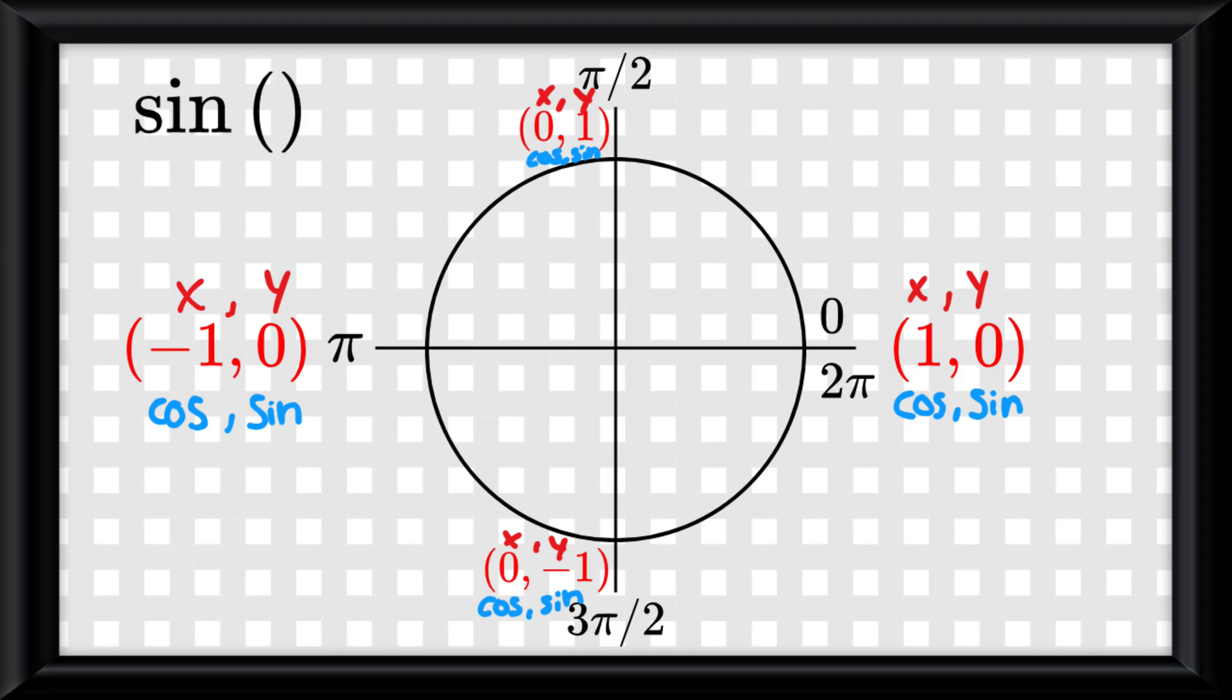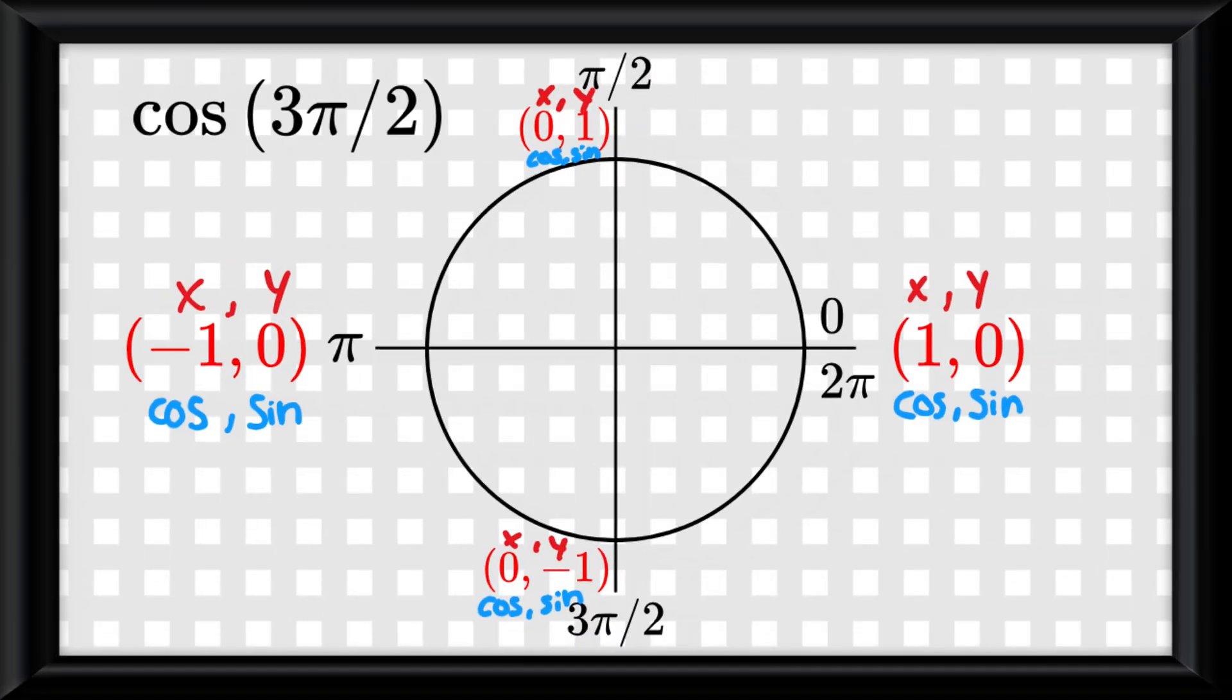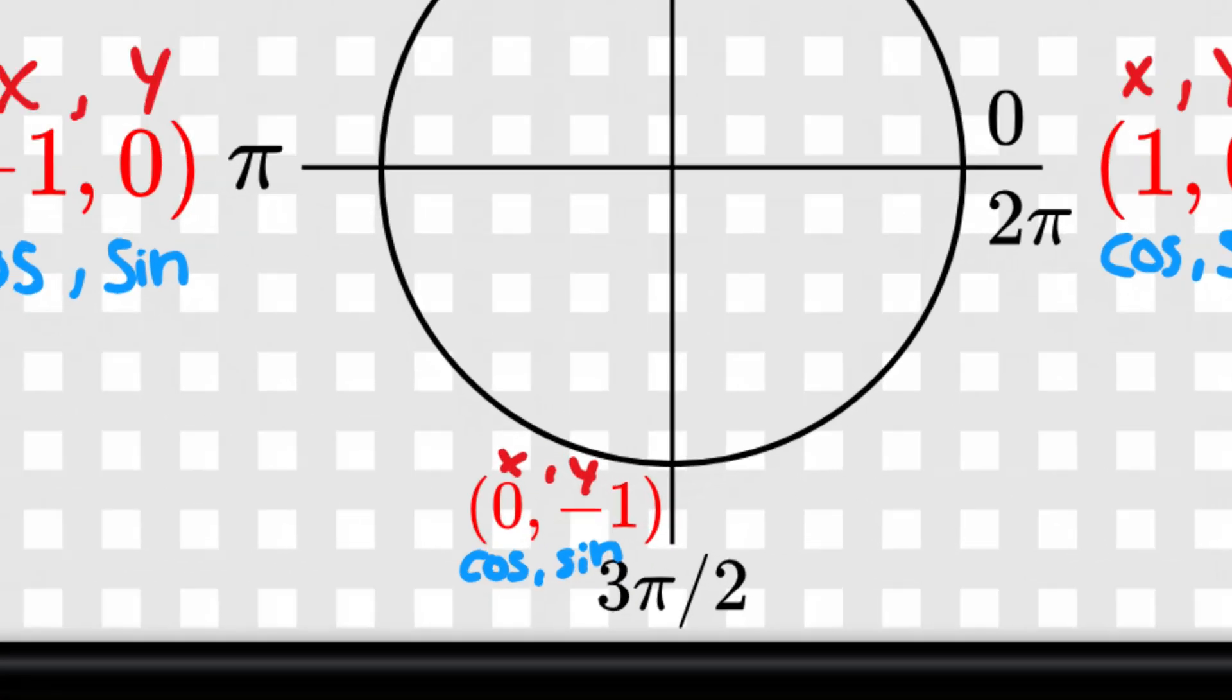Meaning if you were asked to find sine of, let's say, 180 degrees or π radians, it would simply be 0. Or let's say cosine of 270 degrees or 3π over 2 radians, it would be 0.